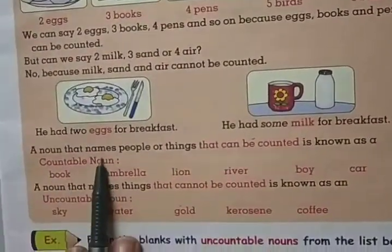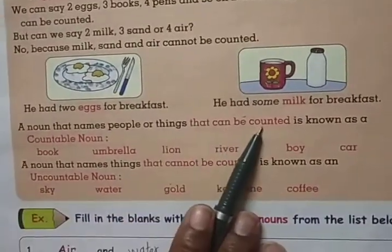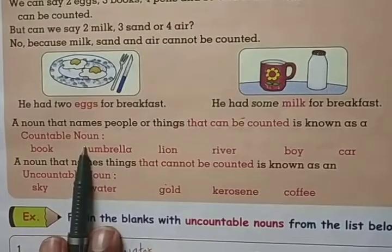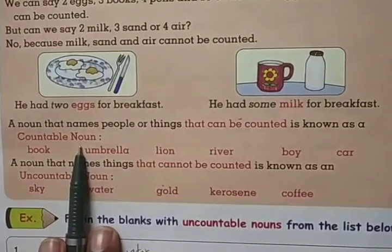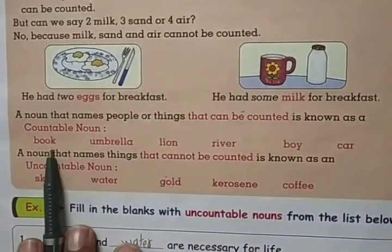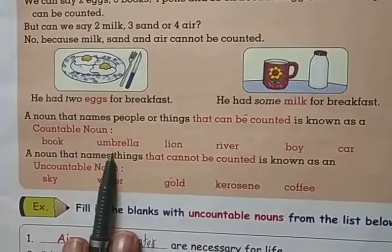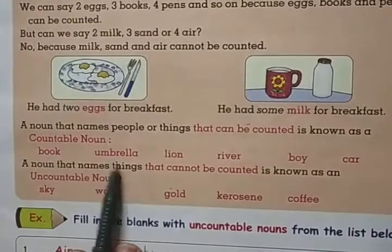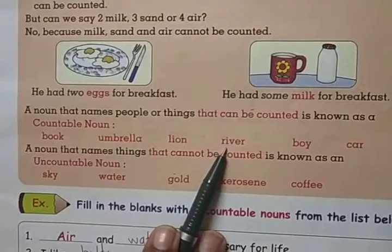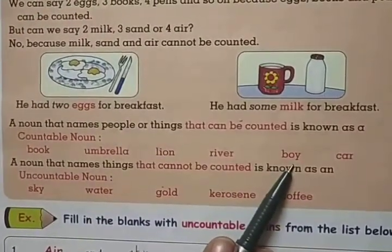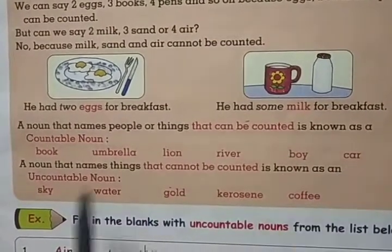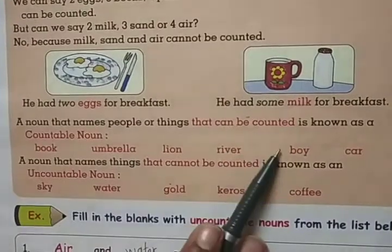A noun that names people or things that can be counted is known as a countable noun. The things or objects that we count are called countable nouns. For example: books — we can say 2 books, 3 books; umbrella — 1 umbrella, 2 umbrellas, 3 umbrellas; lion — 1 lion, 2 lions; river — 1 river, 2 rivers, 100 rivers; boy — 1 boy, 10 boys; car — 1, 2, 3 cars. These are known as countable nouns.